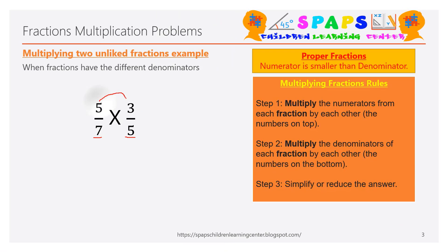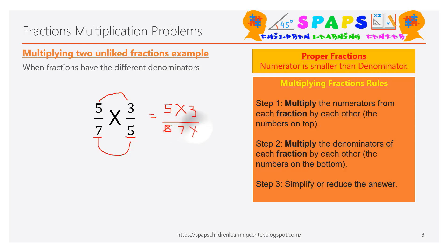The top numbers are five and three, and the denominators are seven and five. So it is five multiply by three, then seven multiply by five. Five multiplied by three gives fifteen, and seven multiplied by five gives thirty-five. We've completed step one and step two. Now the third step is to simplify or reduce the answer.